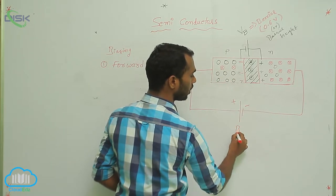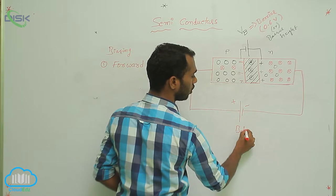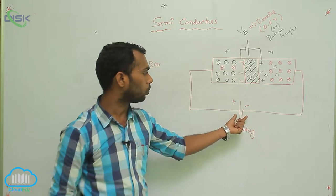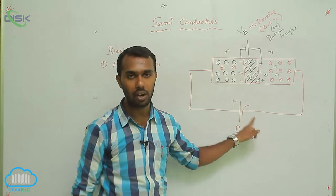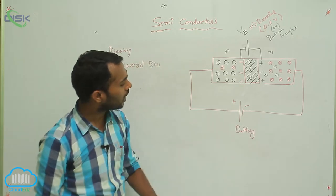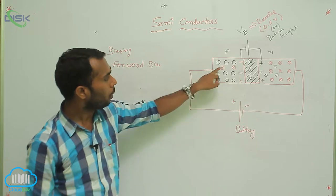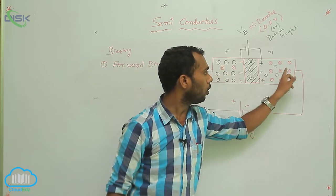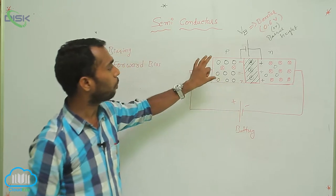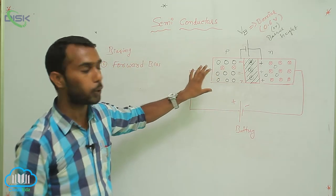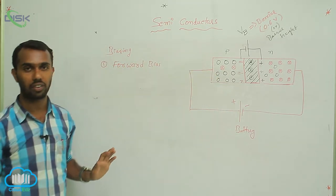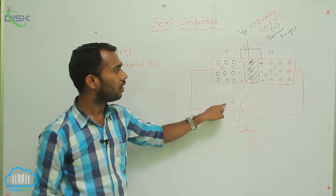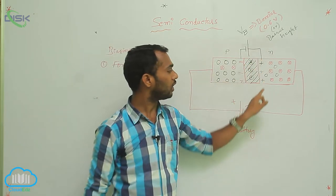It is a battery. A battery consists of two terminals: positive terminal and negative terminal. If you connect the positive terminal to the P side and the negative terminal to the N side, then that P-N junction diode is said to be in forward bias. P connected to plus, N connected to minus.